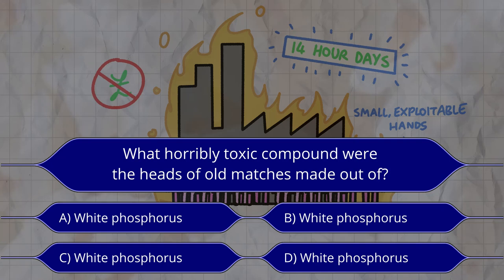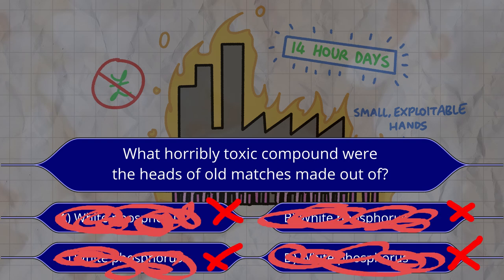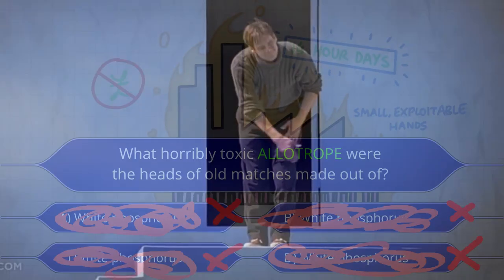Now, start of a ten. What horribly toxic compound were the heads of old matches made out of? The answer, of course, is it's a trick question, because white phosphorus is an allotrope and not a compound. See you next time!